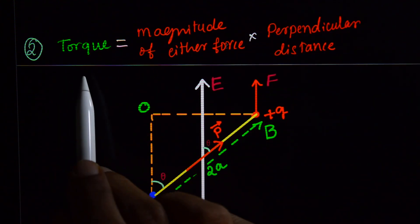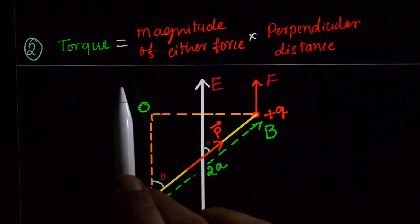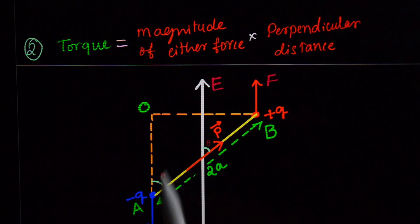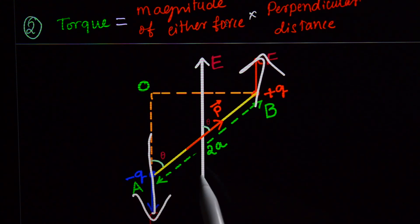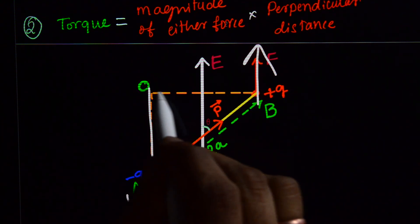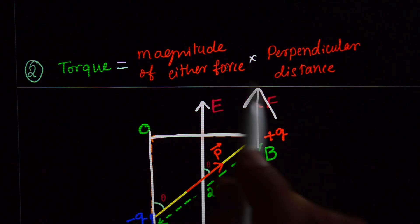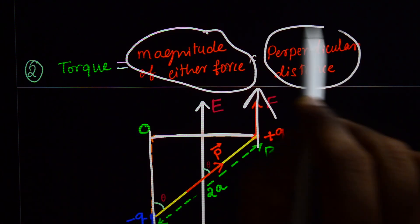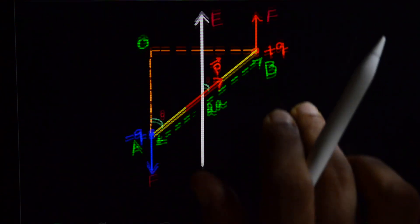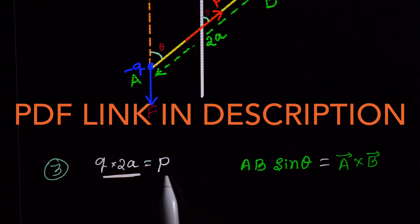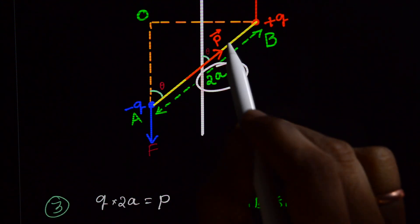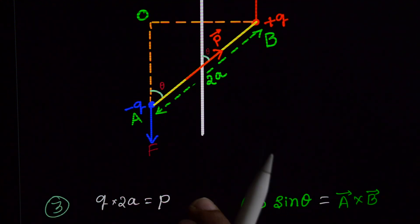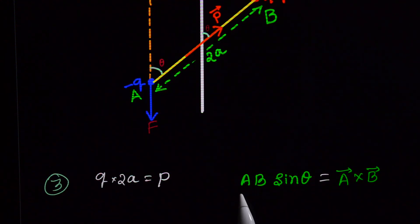Second thing: you need the torque definition. What is torque? Torque involves rotational motion. Here we have two forces — one force in the E direction and one force opposite to the E direction. These two forces have a perpendicular distance between them. Torque equals the magnitude of either force multiplied by the perpendicular distance between the forces. Third: Q into 2A equals P, which is the dipole moment — the product of charge and the distance between the charges. And finally, A times B sin theta equals the magnitude of A cross B. These are the things we need to know for this topic.